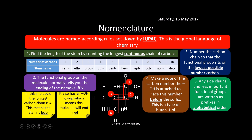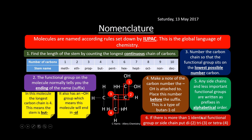Any side chains and less important functional groups are written as prefixes in alphabetical order. Here we've got a methyl group hanging off the third carbon. If there are more than one identical functional groups, we put di-, tri-, or tetra-. In this example we have two alcohol groups, so we put di- in front. The full name is 3-methylbutan-1,1-diol — methyl on carbon 3, four carbons, and two OH groups both on carbon 1.